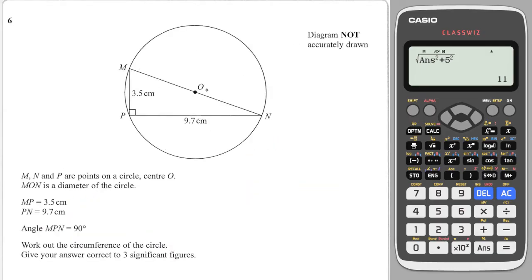Next question: we have a right triangle inside a circle, and it tells us that it goes through the centre M and N, and we have to work out the circumference of the circle. To work out the circumference I need to do 2 times pi times R, so I'll need to work out the radius or the diameter using Pythagoras's theorem. Let's call this side D for diameter — that's the hypotenuse, so D squared is equal to the two shorter sides squared and added together.